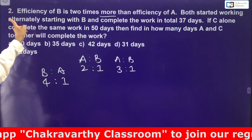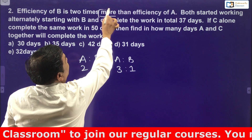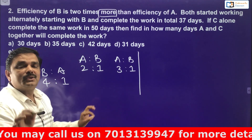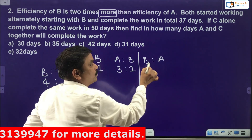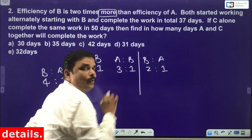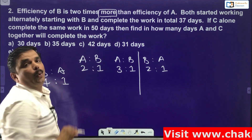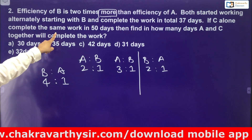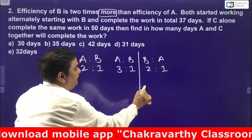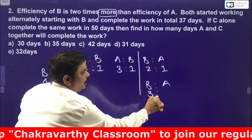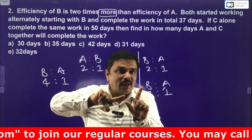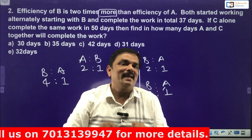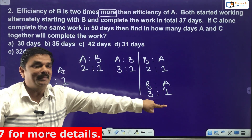Suppose they give: efficiency of B is 2 times more than that of A. Notice the word 'more' — there is a difference here. When the word 'more' is included, the ratio changes. If B is twice as efficient as A, the ratio is 2 is to 1. But if the efficiency of B is 2 times more than that of A, that means B is to A becomes 3 is to 1. The difference must be 2, so 2 times more means 3 and 1.